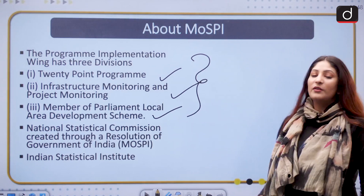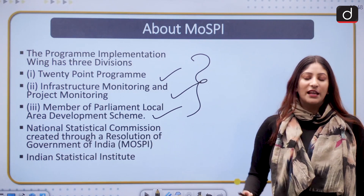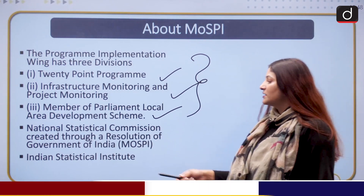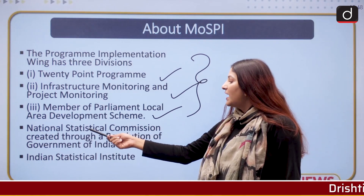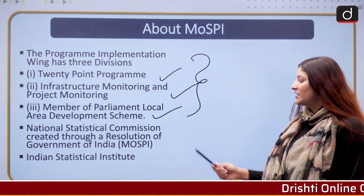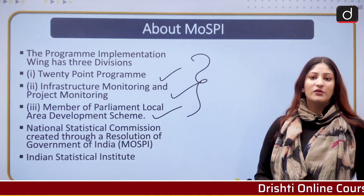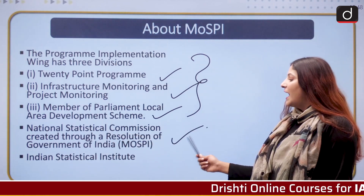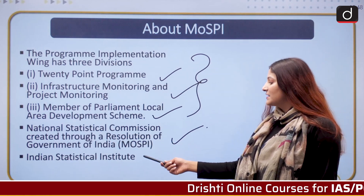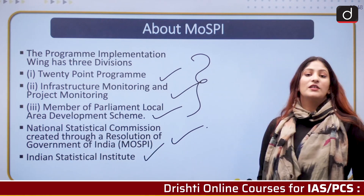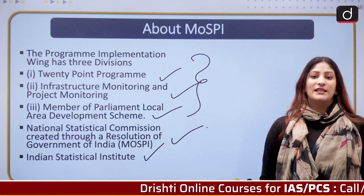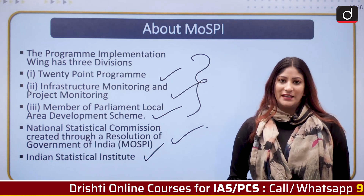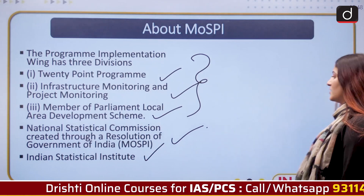There is also one segment — the National Statistical Commission, which is created through a resolution of the Government of India — and the Indian Statistical Institution, which is declared as an institute of national importance by the Parliament.